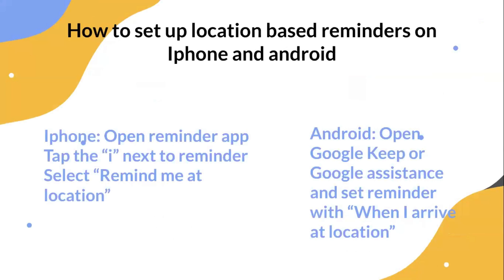To set up location-based reminders on iPhone, open the Reminders app and tap the 'i' icon next to a reminder, then select 'Remind Me at Location' and enter your desired location.